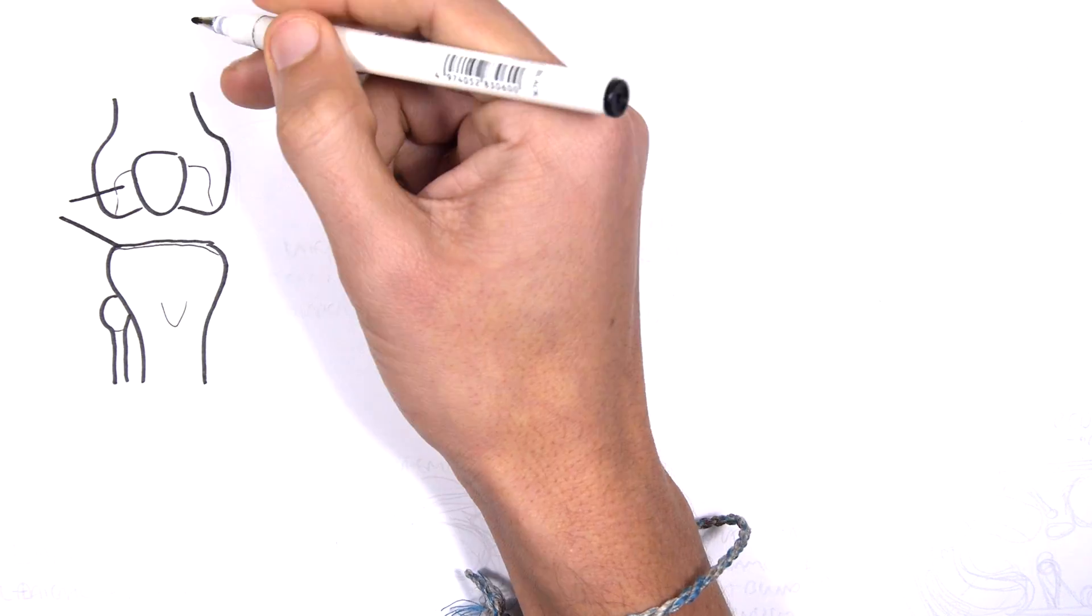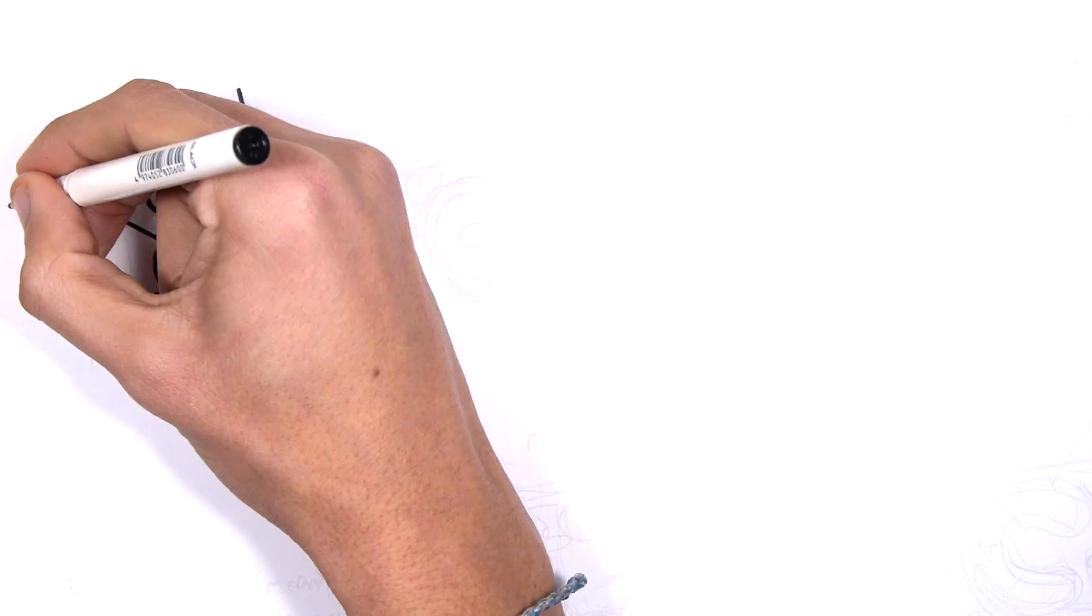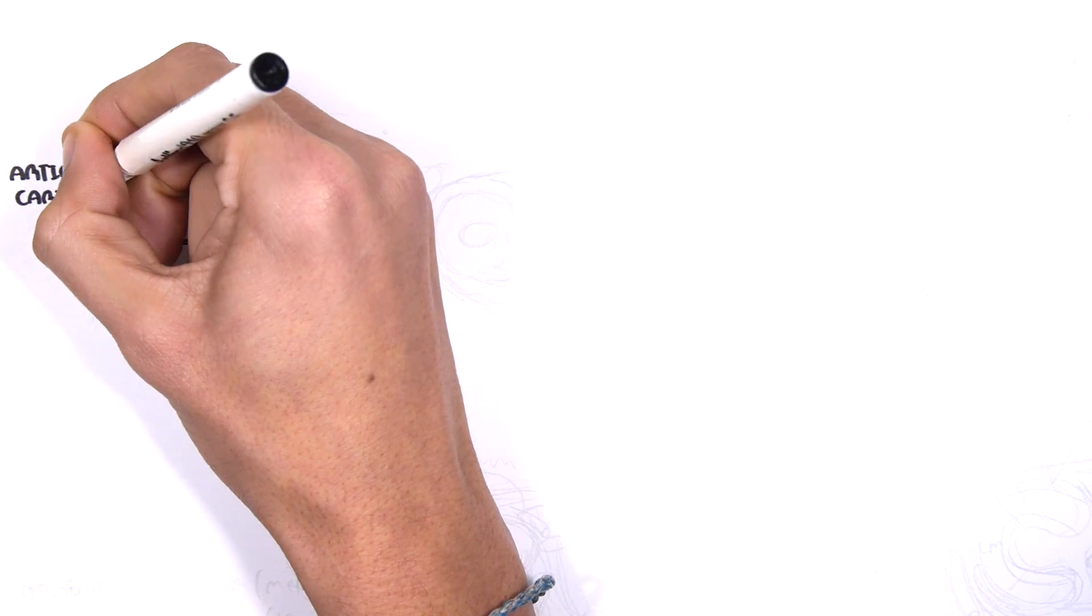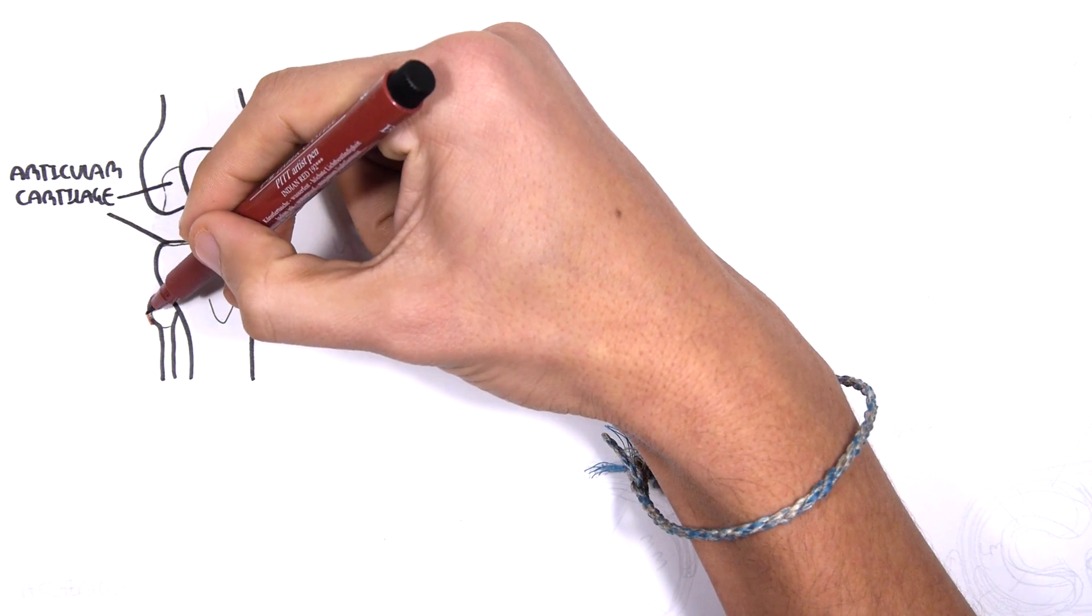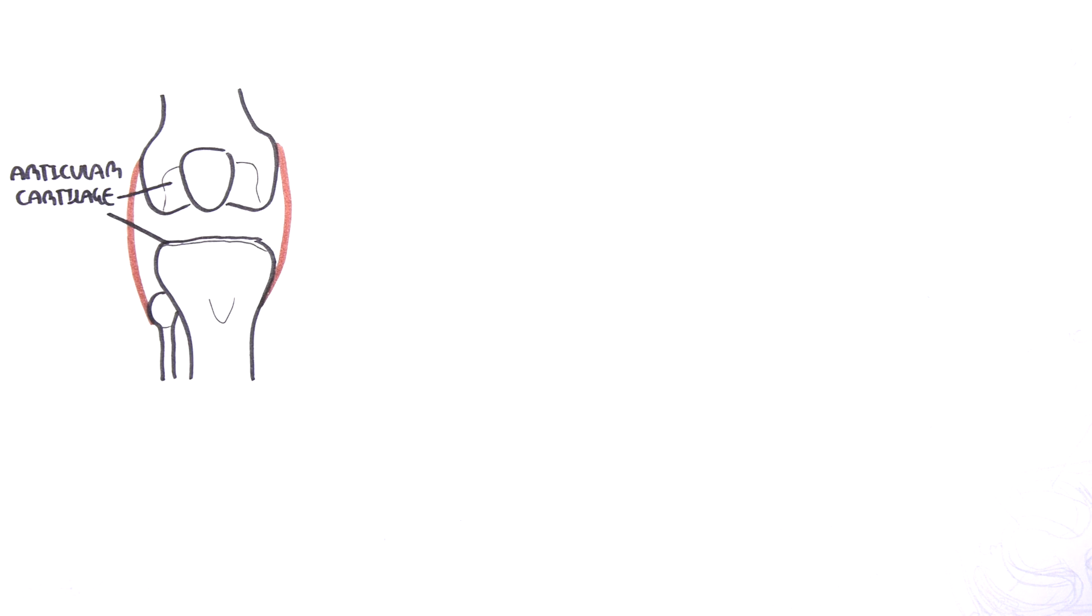On the surface of the ends of the bones we can find articular cartilage, which are shiny cartilages that protect the bone ends from damage. You have many ligaments supporting the joint.